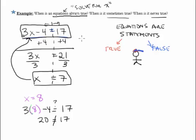So in this case, this equation is sometimes true. Because it's true when x equals 7, but it's not true when x equals 8. It's not true when x equals 9. In fact, x equals 7 is the only value for which it's true. All other ones, it is false.